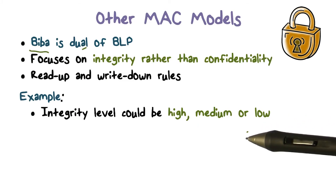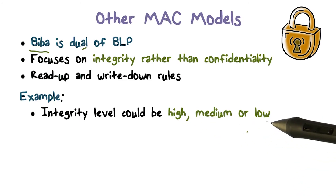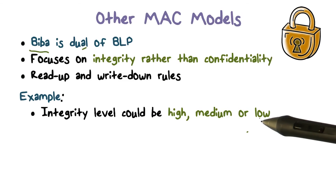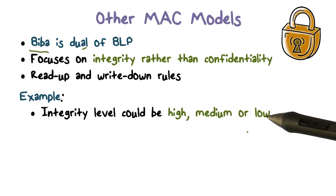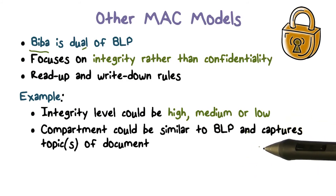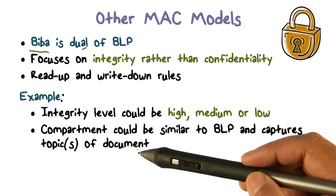For me, it may be the New York Times. The information that appears there is highly likely to be trusted. Your supermarket tabloid, on the other hand, is at the other end. When you talk about confidentiality, it's not about controlling who can see the information — it's about controlling how good the information is. So here integrity is high, medium, or low. Compartments could be similar to BLP — what the information is about, really the topics of the document that contains that information.